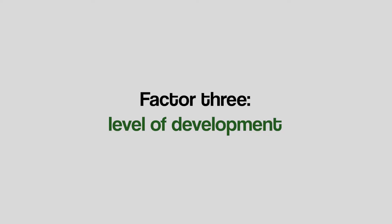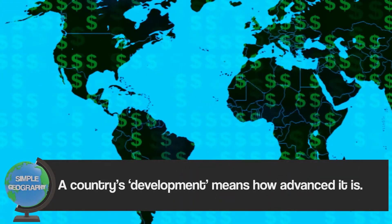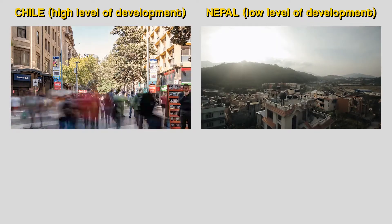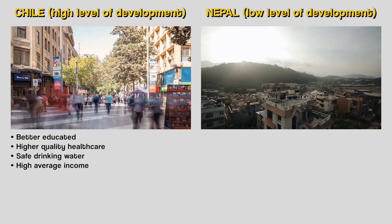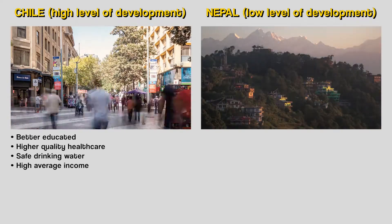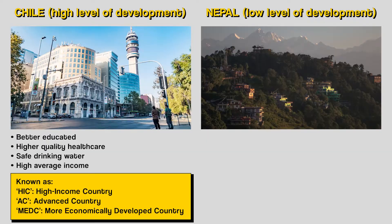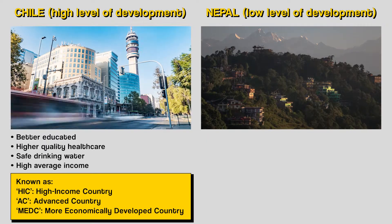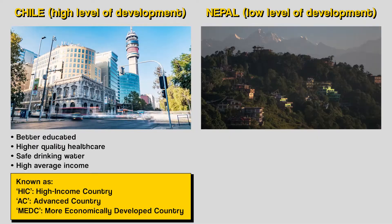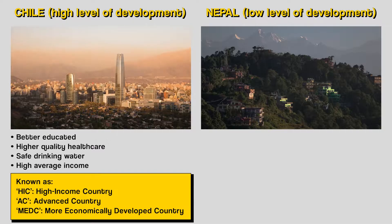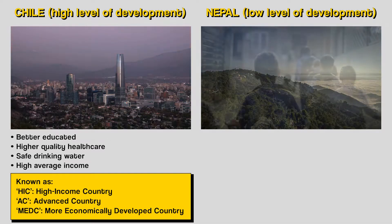Finally, we'll look at probably the most important factor of all: how level of development can affect hazard risk. A country's development means how advanced it is. Typically, the population of a country with a high level of development will have a better standard of living thanks to being educated, having access to healthcare, safe drinking water and earning more money. We often call these countries HICs, short for high income country. You may have also heard these being called ACs, short for advanced country, or MEDCs, short for more economically developed country — they all mean pretty much the same thing.